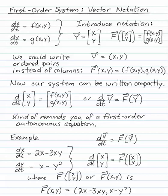For a specific example, let's look at dx/dt is 2x minus 3y and dy/dt is x minus y squared. Well then, the vector (x, y) gets transformed into the vector f(x, y), where f(x, y) is (2x - 3y, x - y^2).